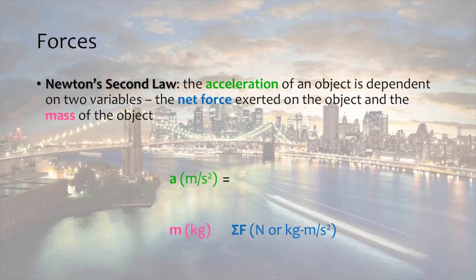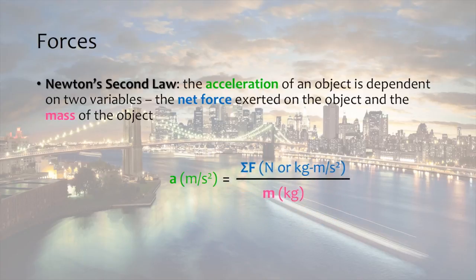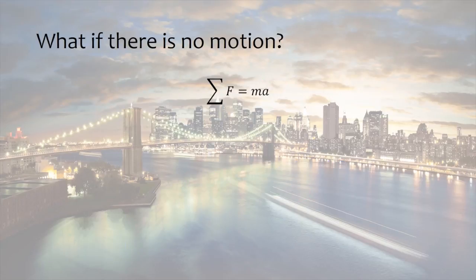How should we arrange mass and net force on the right side of the equation to get acceleration units? We should put net force in the numerator and mass in the denominator so that kilograms cancel, and we end up with units of meters per second squared. We can rearrange this equation to a more useful form, where the sum of the forces equals mass times acceleration. How does this equation relate to structural design? We know that structures aren't moving, so first we should answer the question: what if there is no motion?